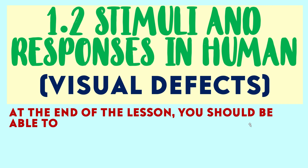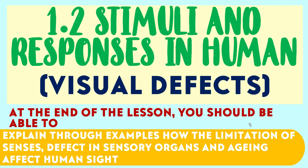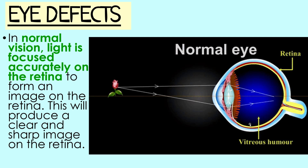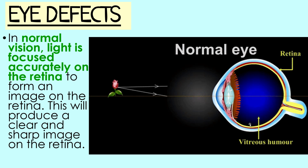At the end of the lesson, you should be able to explain through examples how the limitation of senses, defect in sensory organs and ageing affect human sight. For a person with normal vision, the thickness of the lenses will change so that images of distant and nearer objects are focused exactly on their retina. The image produced will be very sharp and clear.